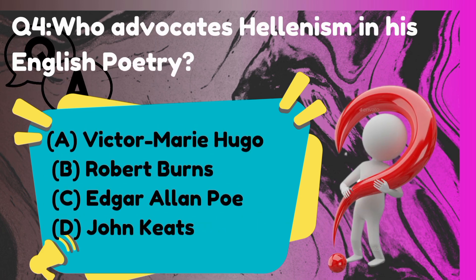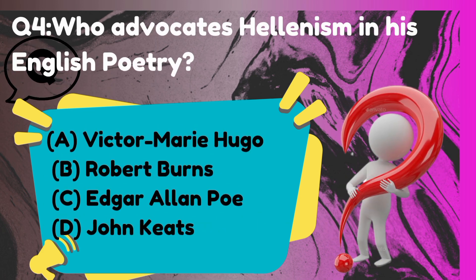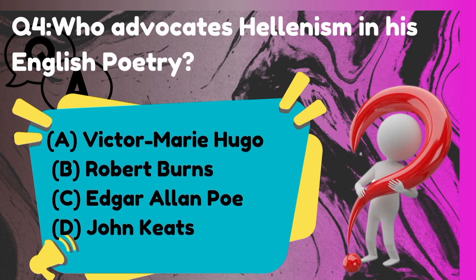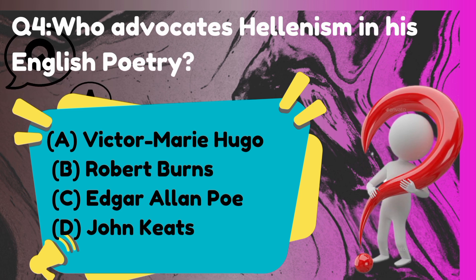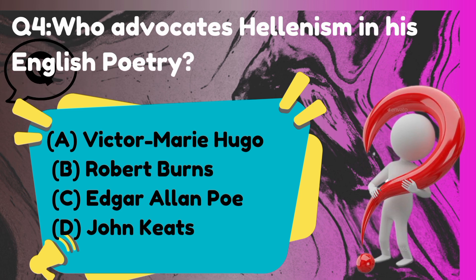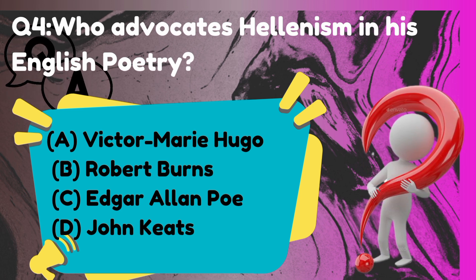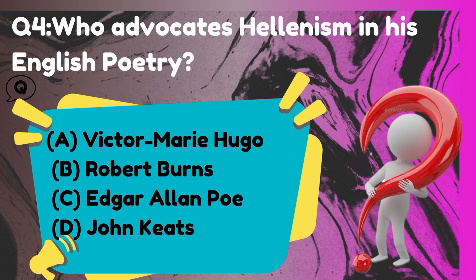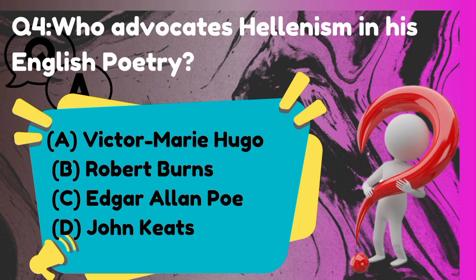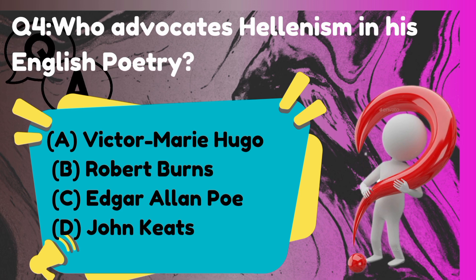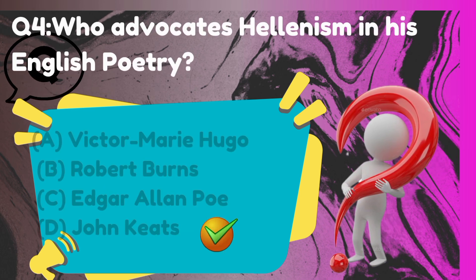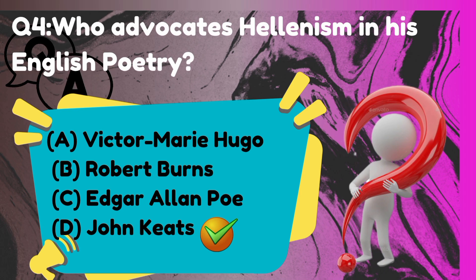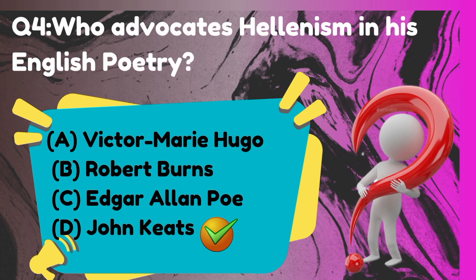Who advocates Hellenism in his English poetry? The correct answer is option D: John Keats.